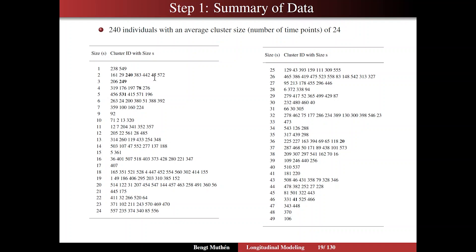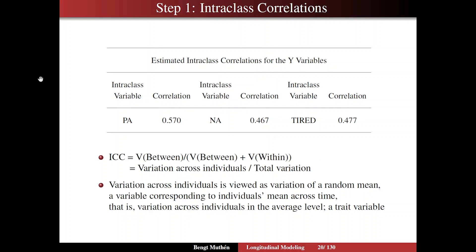Individual 45 is bolded for another reason that we get to in subsequent analysis. So here is our first result on slide 20. We get the so-called estimated intraclass correlations out of the typical basic analysis. We have an intraclass correlation for PA, for NA, and for tired.